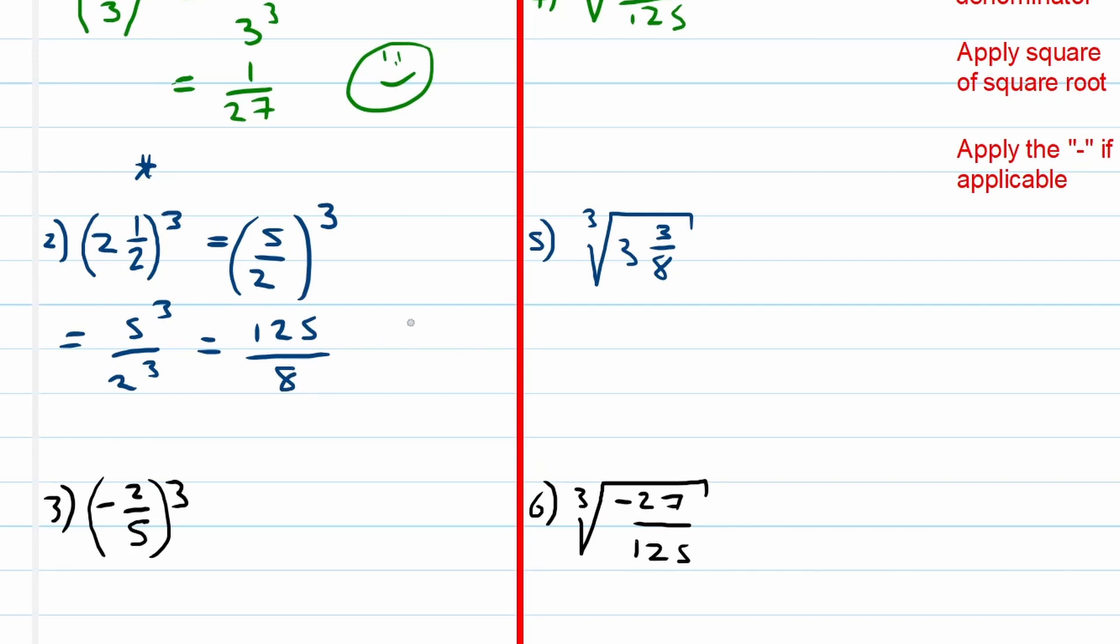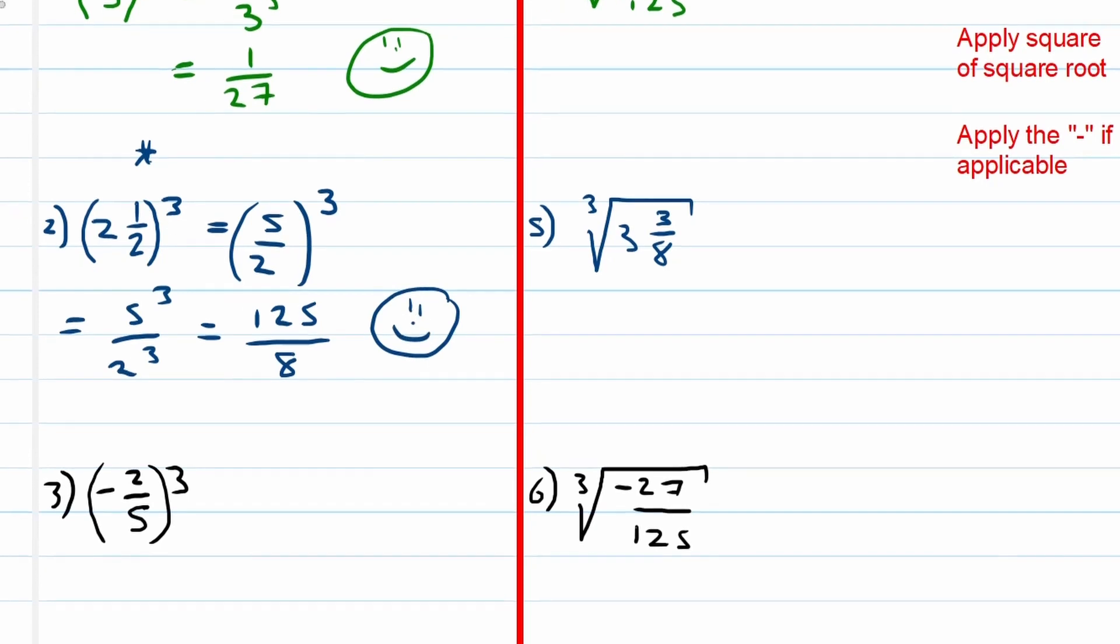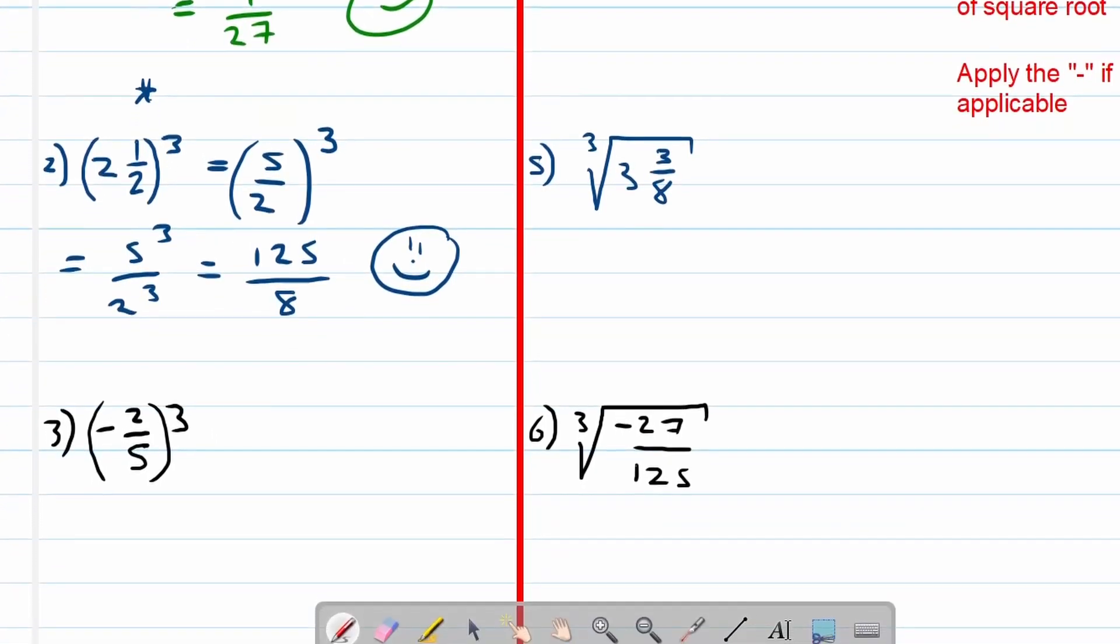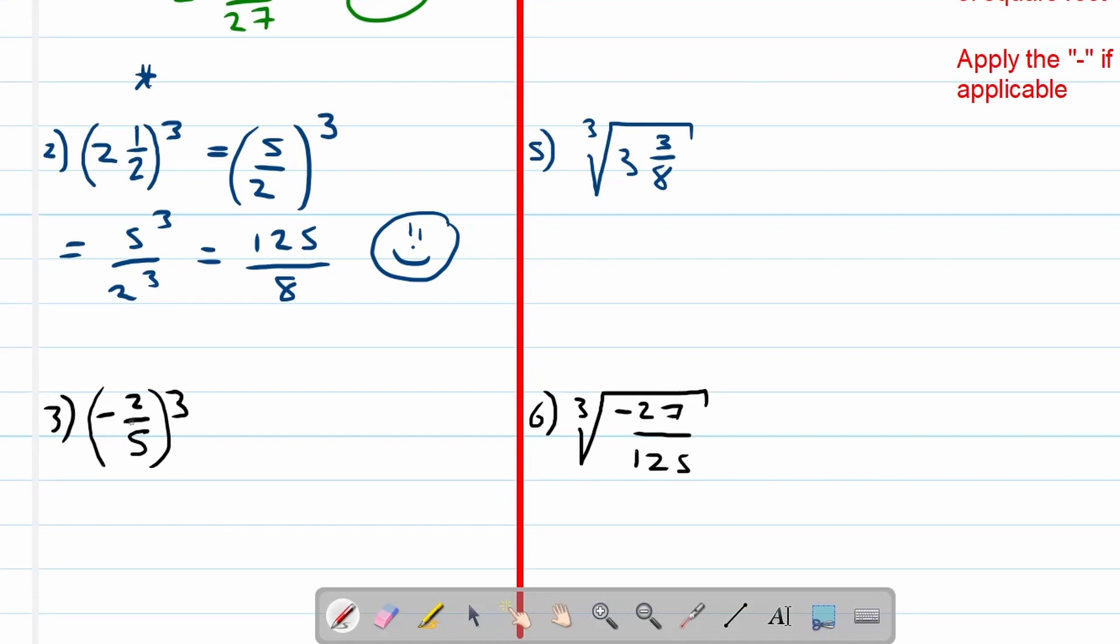Let's look at the last example of cubes. We've got a negative number here and this is not a problem. Remember we are multiplying these numbers with itself. So first things first is we will say a negative times a negative times a negative will be a negative.